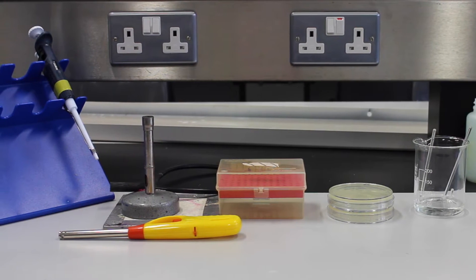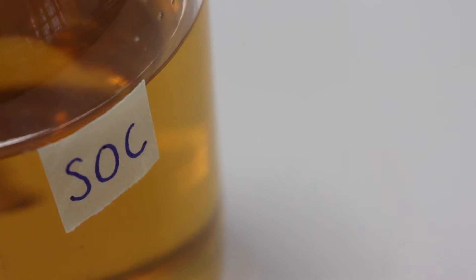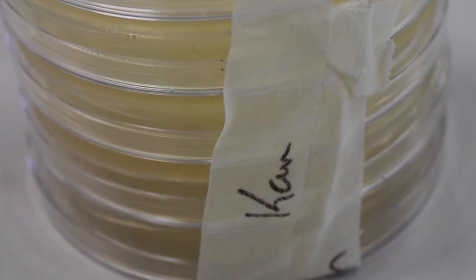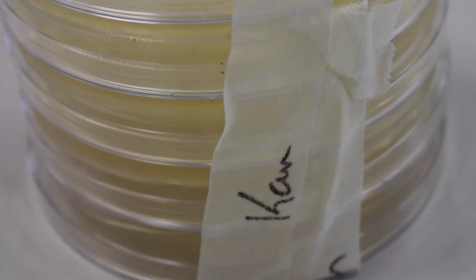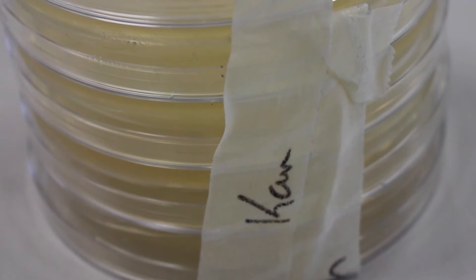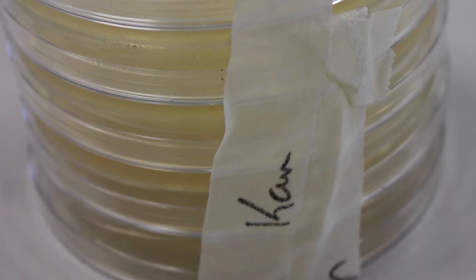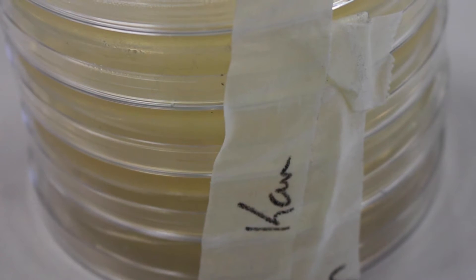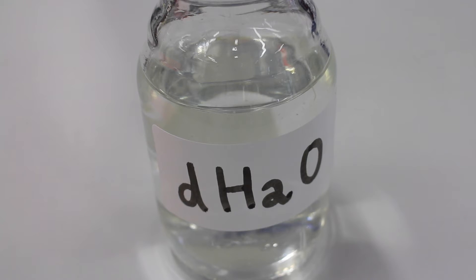The following are required for this protocol: competent E. coli cells, SOC medium, agar plates containing an appropriate antibiotic such as kanamycin. To learn how to make the competent E. coli cells, SOC medium and agar plates, please click on the links provided. DNA plasmids—plasmids for this video were obtained from an iGEM DNA distribution kit plate—and distilled water are also required.